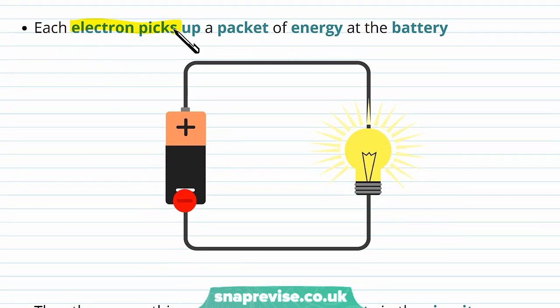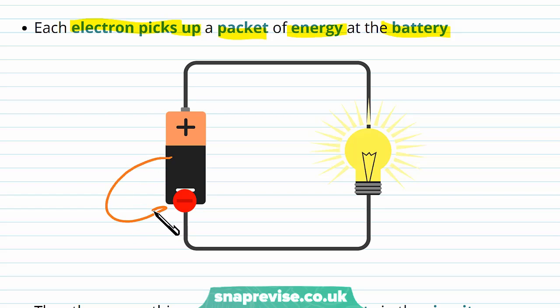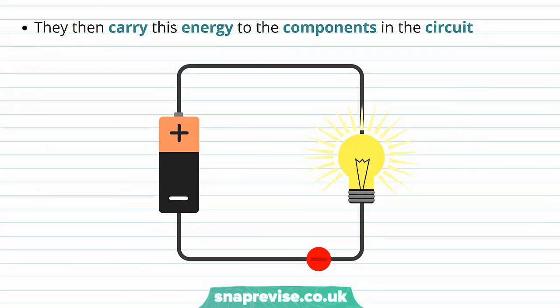Each electron picks up a packet of energy at the battery — when the electron comes around to the battery it actually picks up some energy. This is what a battery does: its purpose is to provide the electrons in the circuit with energy so that they can move around the circuit and provide the other components with energy. The electrons then carry this energy to the components in the circuit.